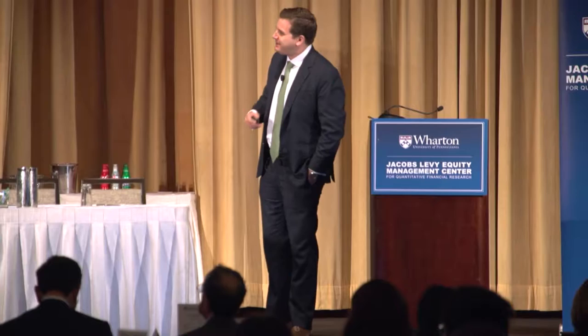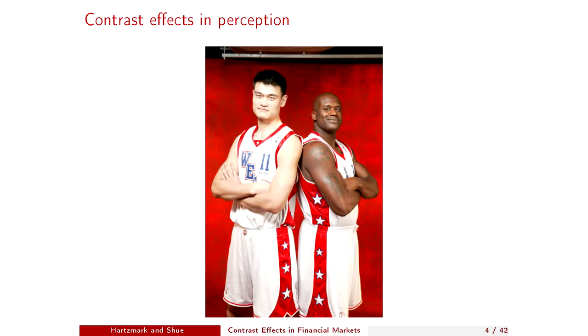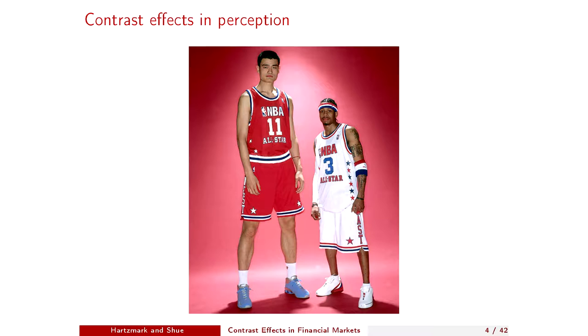That's how we kind of view the world. One more example of perception — this is Yao Ming and Shaquille O'Neal, two ex-basketball players, two humongous human beings. Shaq in particular is quite large, but standing next to Yao Ming he looks a little bit shorter. Now if you put in someone more normal size — Allen Iverson, who's about my height — Allen Iverson looks pretty small next to Yao. Everyone looks a little bit shorter standing next to someone who's extremely tall.